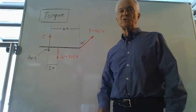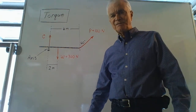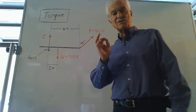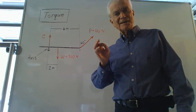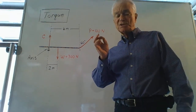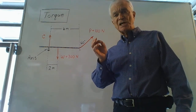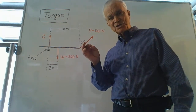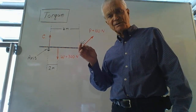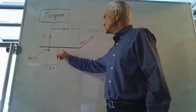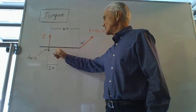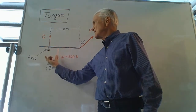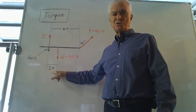Now let's go through the same thing for the weight vector. Its point of application is at the center of the rod. Lever arms are line segments that extend from the fulcrum, the axis, to the point of application of the force in question. The lever arm for the weight force is that line segment, and the lever arm length is two meters.